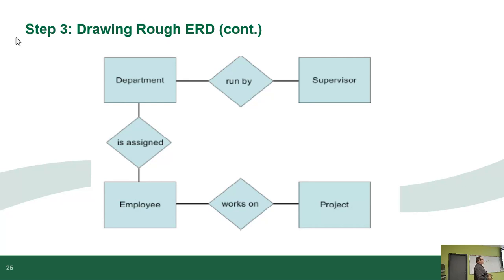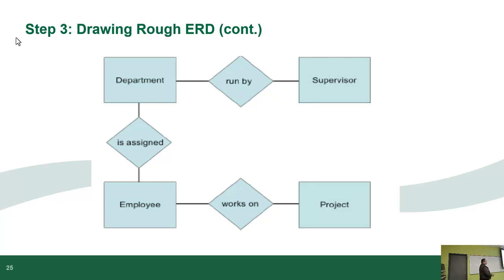Now we draw the rough ERD. You put all the entities in rectangles, then use diamonds and lines to represent the relationships. This gives us: supervisor runs department; department is assigned employee; employee works on project. Put it all together and you get what's called a standard conceptual diagram, also known as a Chen diagram. This is the simplest version of an ERD — great for explaining data relationships to a non-technical person, because once they understand what the three symbols mean, they can read the whole diagram.